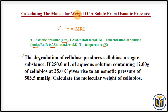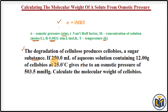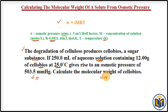In this problem, I will show you how to use this formula to calculate the molecular weight of a solute. The problem states that the degradation of cellulose produces cellobiose, a sugar substance. If 250.0 mL of an aqueous solution containing 12.00 grams of cellobiose at 25°C gives rise to an osmotic pressure of 503.5 mmHg, calculate the molecular weight of cellobiose.